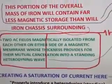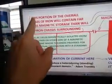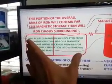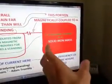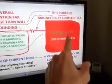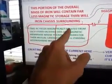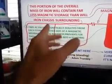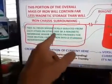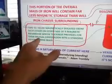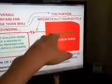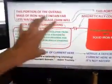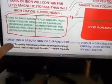So this little diagram points out that this portion of the overall mass of iron will contain far less magnetic storage than will this portion, because this is much more massive. And this is magnetically coupled to a solid iron mass. And this is the iron chassis surrounding two AC fields magnetically isolated from each other on either side of a magnetic membrane, whose thickness provides for their mutual cancellation into a standing heterodyning wave, which is then sent over to a resonant domain of solid iron mass.